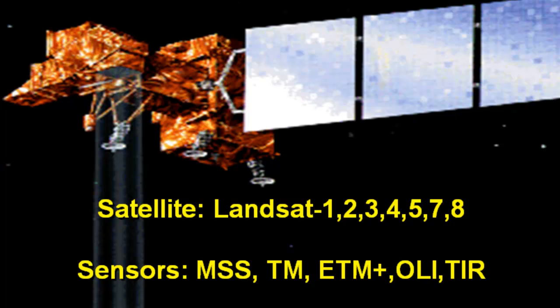The early Landsat satellites 1, 2, and 3 had MSS. Landsat 4 and 5 had MSS and TM, the Thematic Mapper. Landsat 7 had the Enhanced Thematic Mapper, and Landsat 8 has two sensors on board.